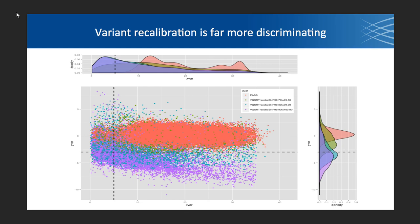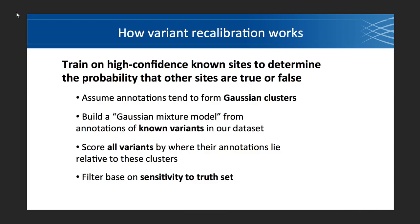As you take more and more of the bad stuff, your sensitivity increases but your specificity decreases and your false positive rate increases. The model we build is called the Gaussian model. We assume that variants come from Gaussian-shaped clusters in our annotation space — a seven or eight-dimensional annotation space — and we build a mixture model of several Gaussians for the good stuff and several Gaussians for the bad stuff. We train that model, evaluate a variant against both models, and the ratio gives it a relative score.